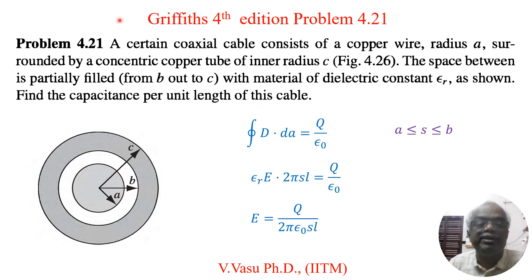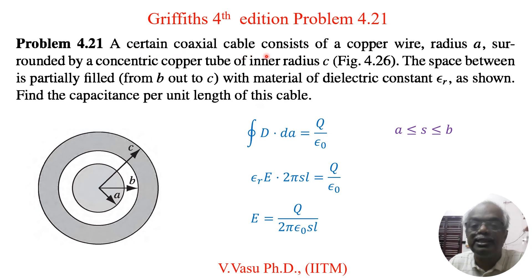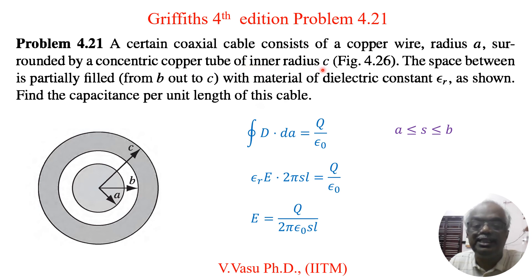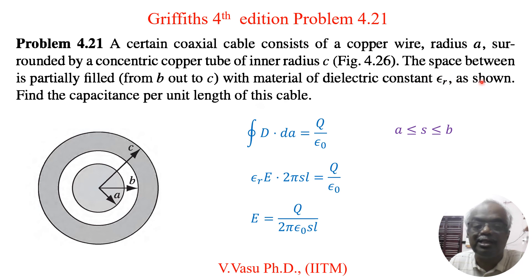Today we will find the solution to problem 4.21 of Griffiths 4th edition Introduction to Electrodynamics. Problem 4.21: a certain coaxial cable consists of a copper wire of radius A, surrounded by a concentric copper tube of inner radius C, as shown in figure 4.26. The space between is partially filled from B out to C with a dielectric material of dielectric constant epsilon R. Find the capacitance per unit length of this cable.